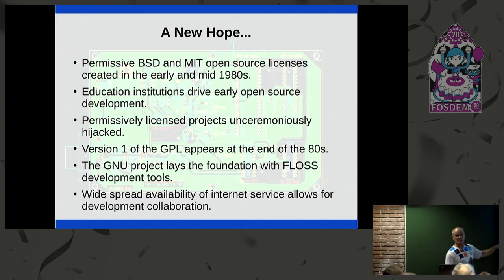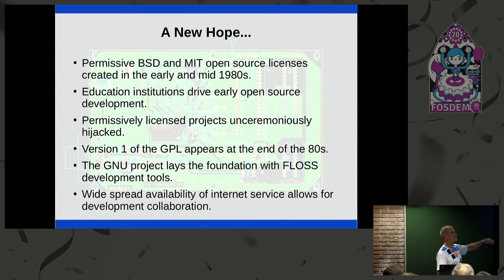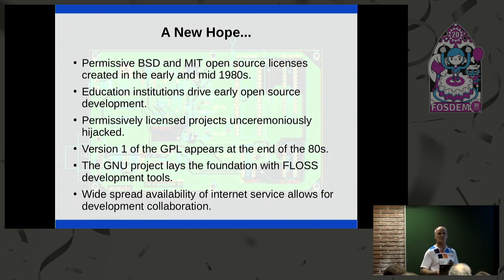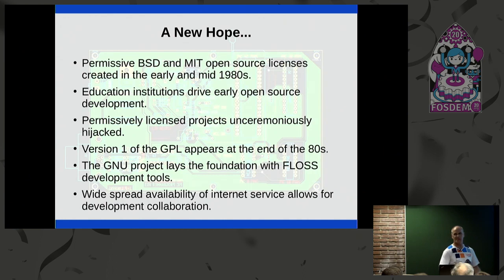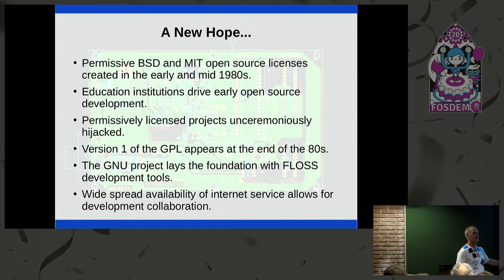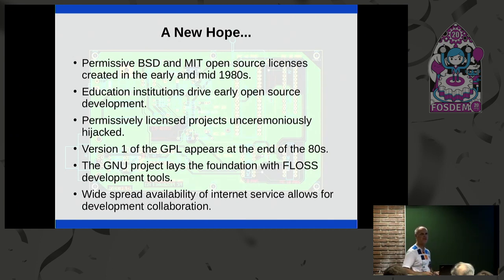Later in the eighties, the GNU project was formed and they released the first version of the GPL. The GNU project worked on all the core tools — compilers, librarians — essentially clean room versions of all the UNIX tools people used back in those days. What helped spur that was the internet — even the dial-up days of 19.2K where your phone line would scream at you when you logged on. It was a way for people to collaborate, and things started to grow pretty quickly at this point.